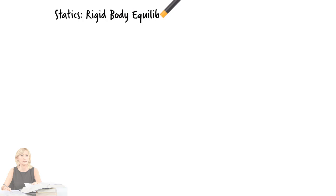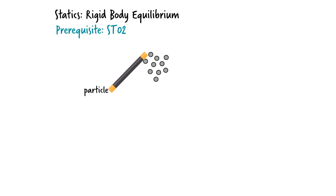Rigid Body Equilibrium. A rigid body is a collection of connected particles. For example, we can view a bar as being a collection of an infinite number of particles arranged in a specific manner, like this.